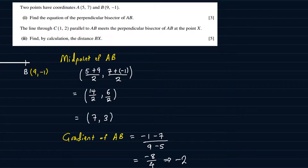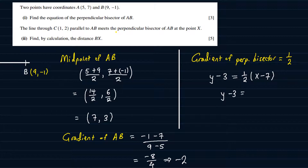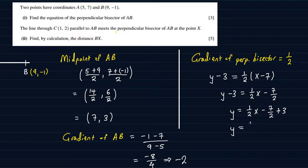Since the gradient of AB is −2, the gradient of the perpendicular bisector is going to be one half. So for the equation of the perpendicular bisector, we do y − 3 = ½(x − 7). Expanding gives y − 3 = ½x − 7/2, so y = ½x − 7/2 + 3, and −7/2 + 3 = −½. So y = ½x − ½ is the equation of the perpendicular bisector.